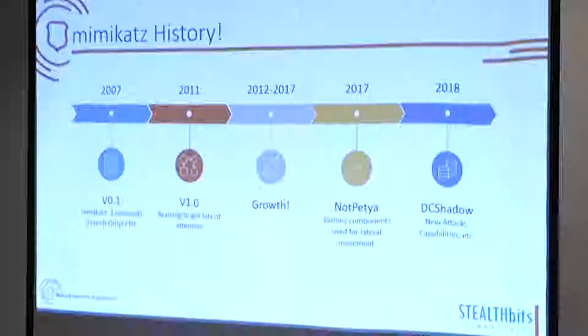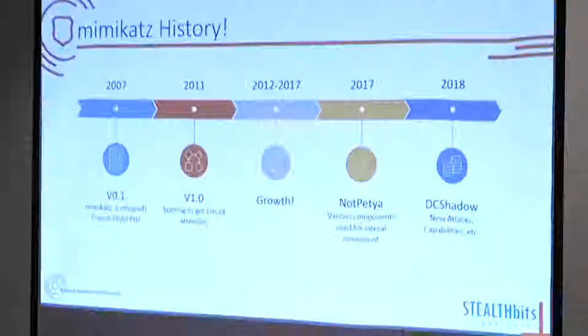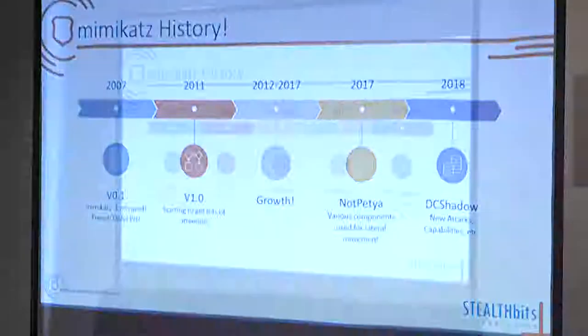Just a couple quick notes on Mimikatz history. The first version was in 2007 - it was in French only but it did have pass-the-hash. 2007 was apparently one of those big years where pass-the-hash was a big topic. Over the years, more and more features were added. In 2011 it hit 1.0 and started to get a lot of attention - security bulletins and support tickets were being created from what this tool could do. Then in 2017, Mimikatz code was actually likely being used in some payloads like NotPetya, where it utilized some components for lateral movement - not the executable itself, but components of it. And then 2018 brought version 2 with DC Shadow and many new capabilities.